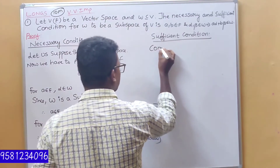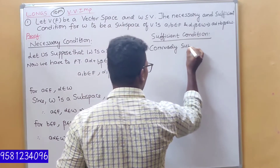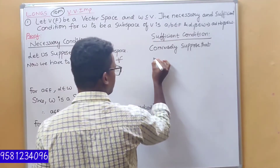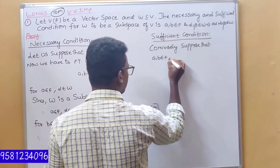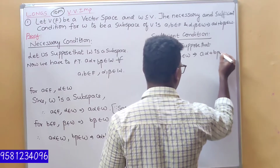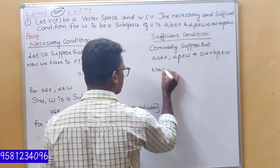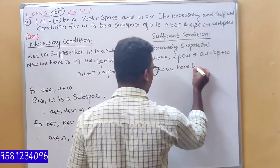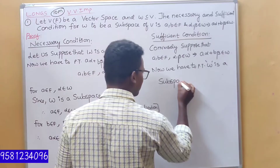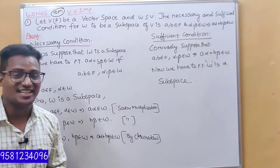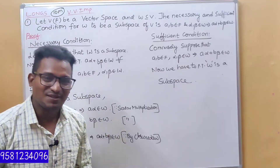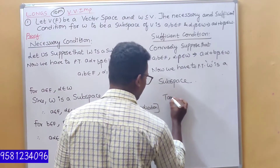Conversely, suppose that A and B belong to F, alpha and beta belong to W, and A·alpha plus B·beta belongs to W. Now we have to prove that W is a subspace. Any conditional condition: alpha minus beta, and A·alpha belongs to W — both are in W. W is a subspace.